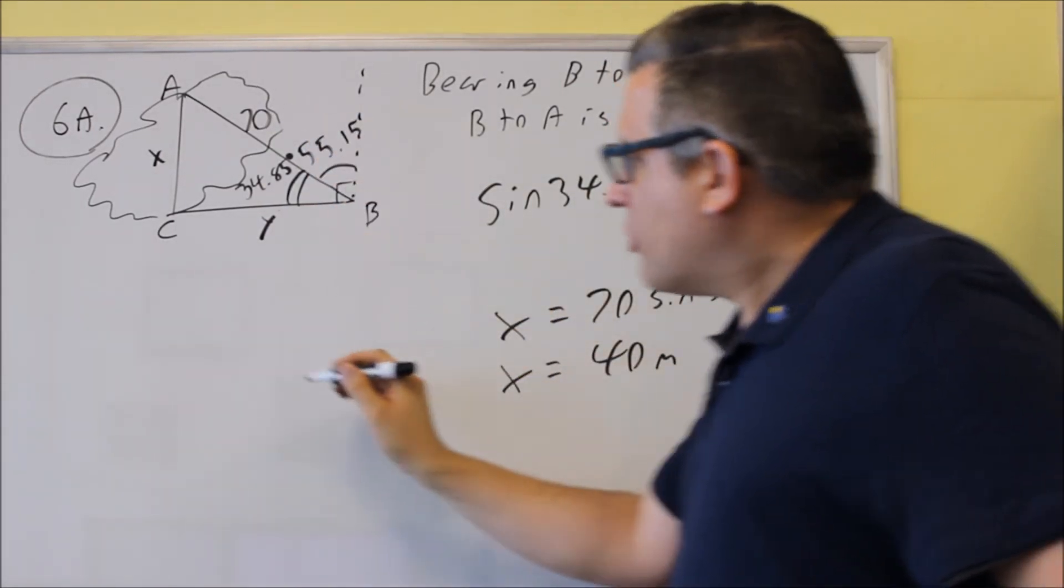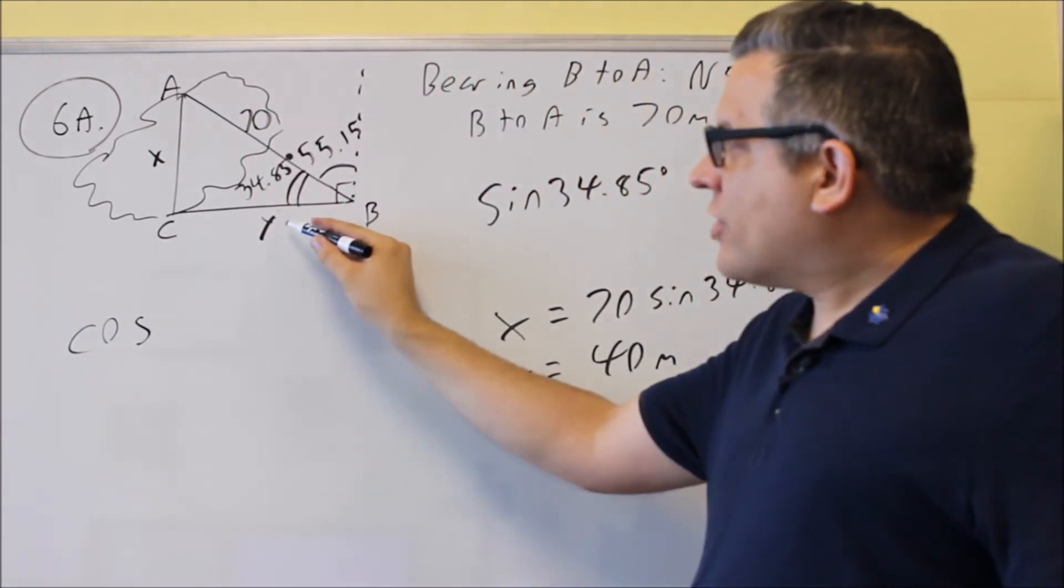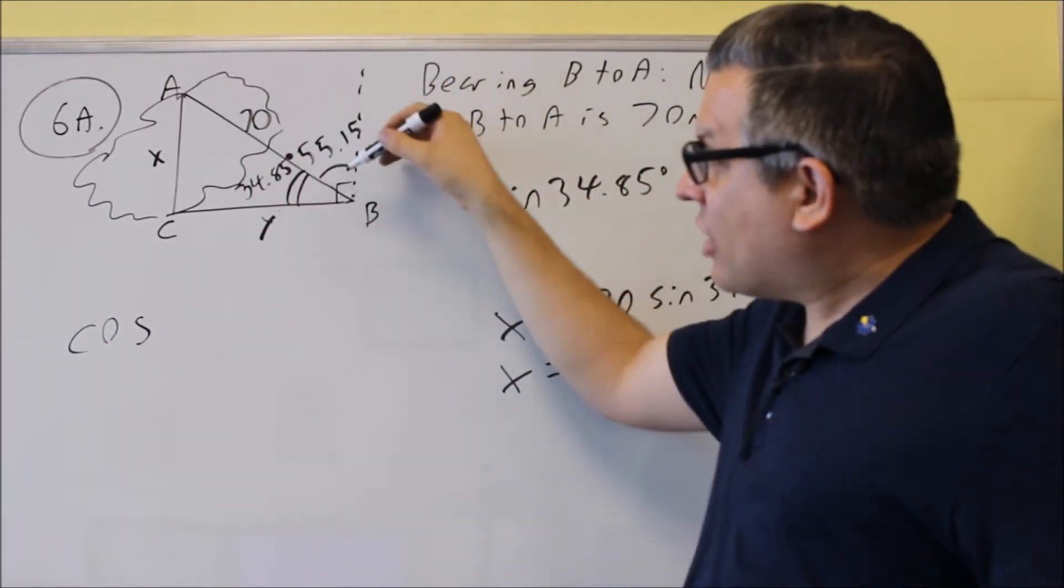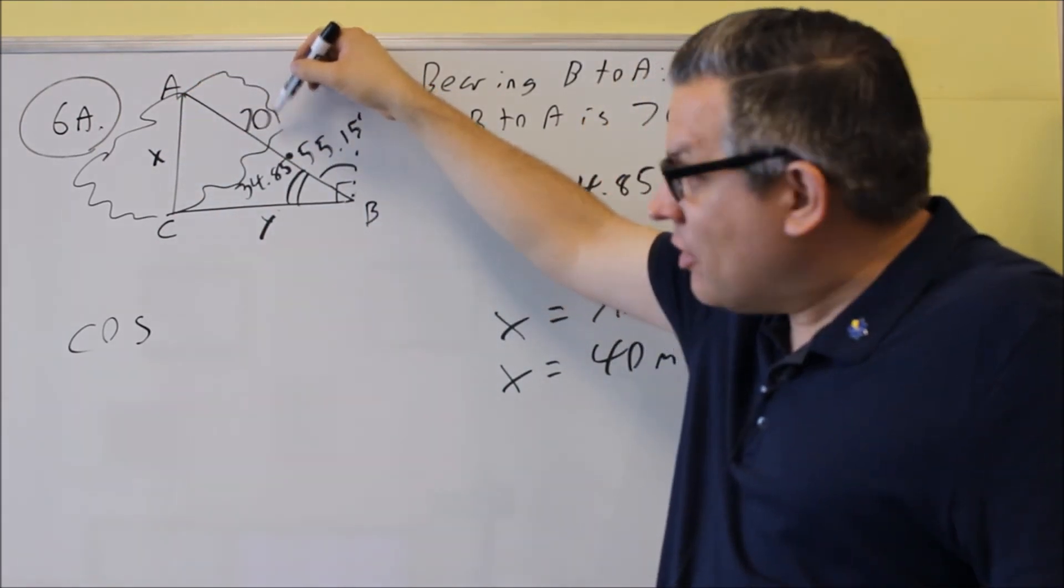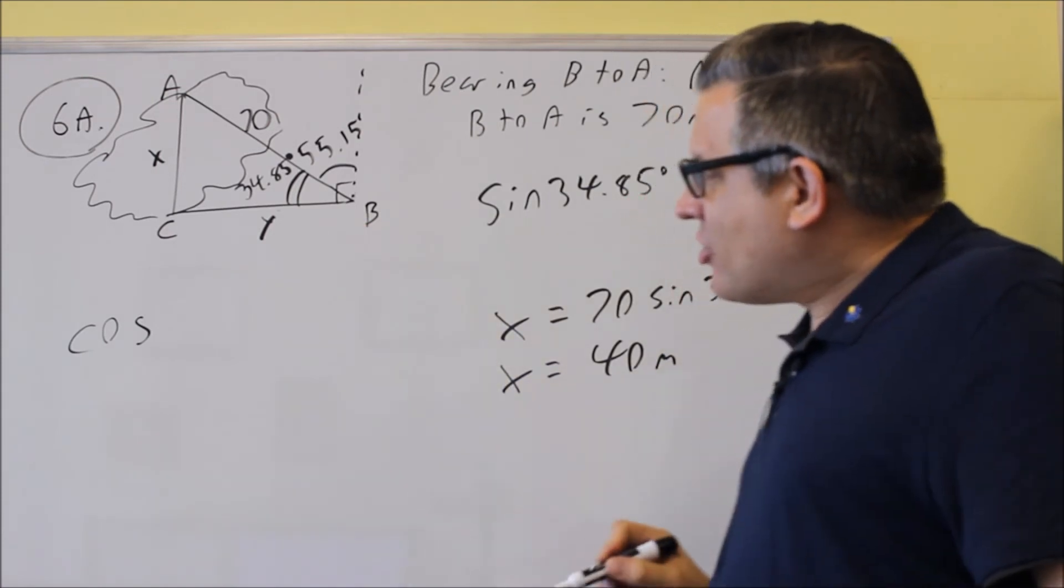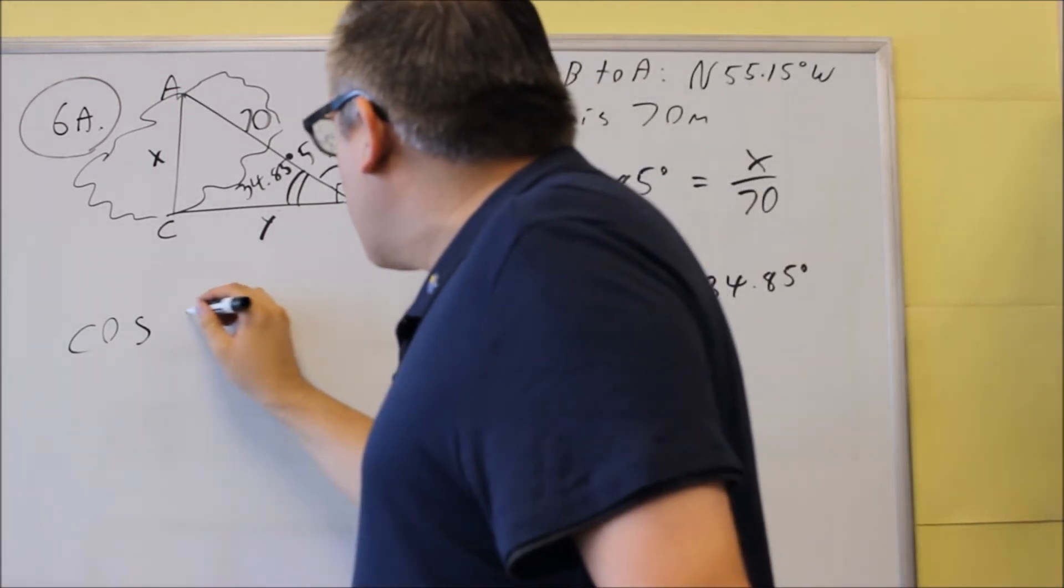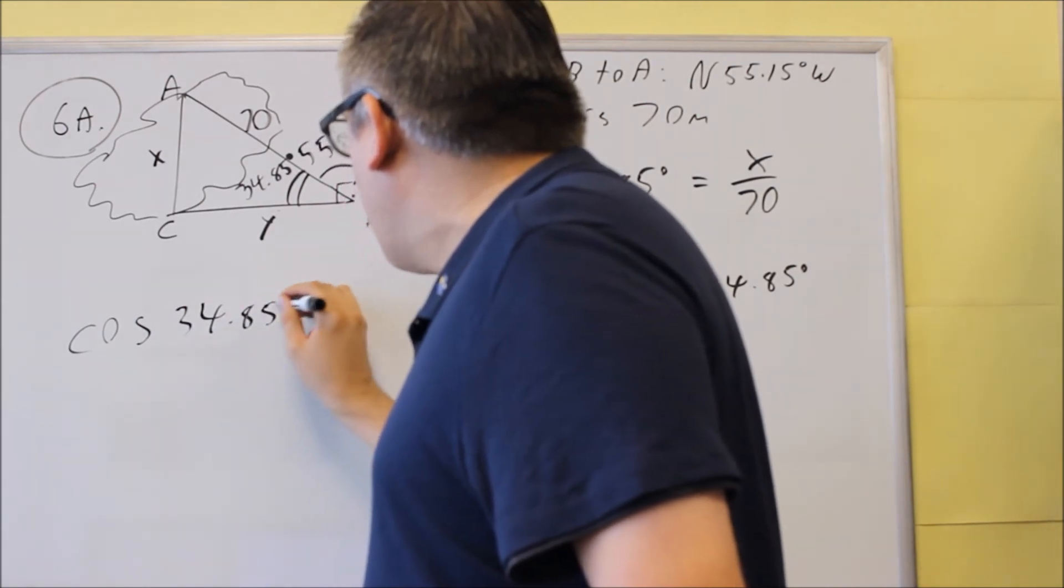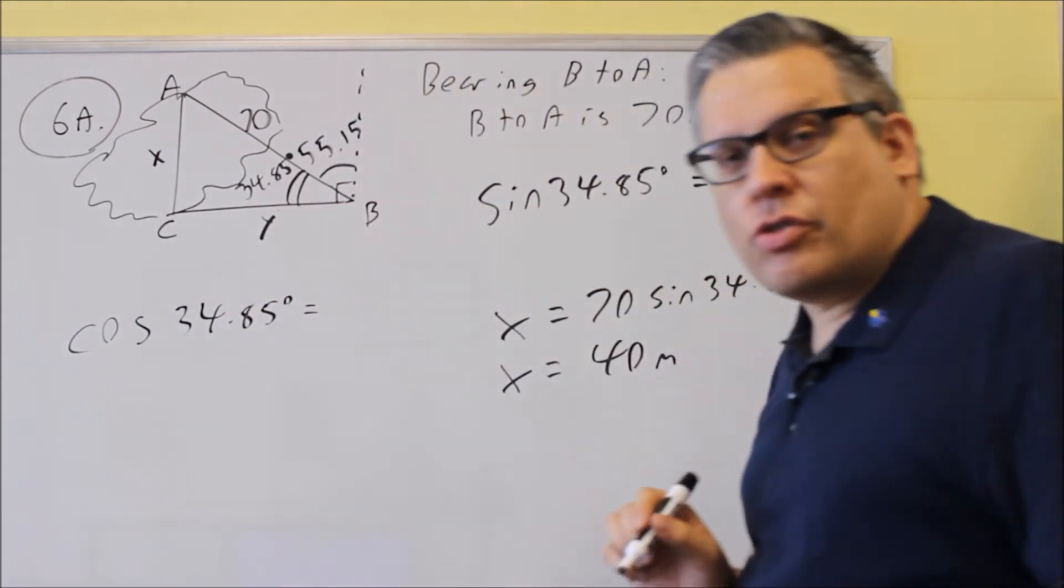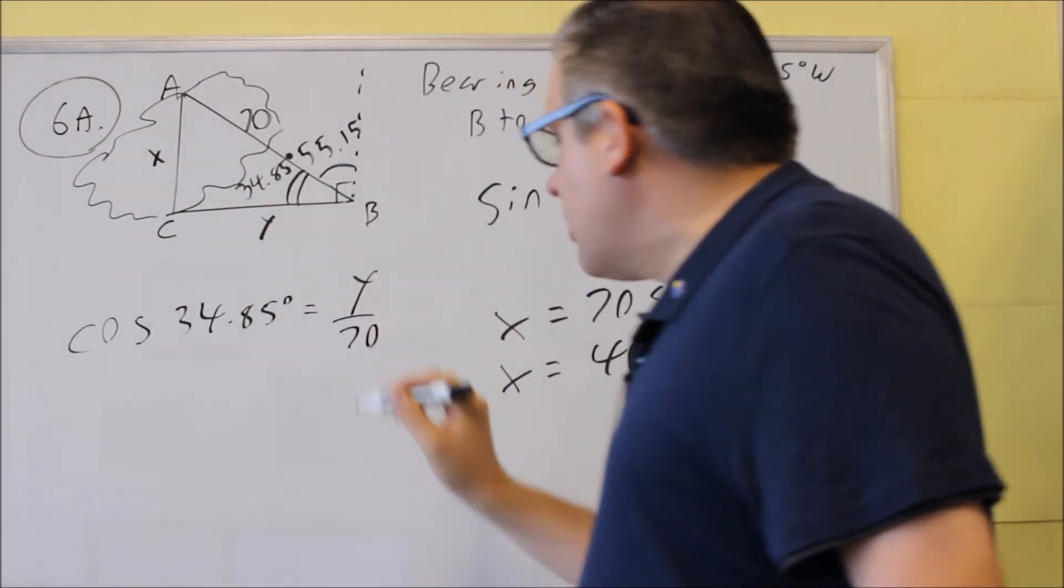So we want to use cosine because we have an adjacent here over hypotenuse. So last time we had opposite over that one. That was sine. This time, this side, CB, that's the adjacent side. And so we're going to use a cosine in this one. We're still going to use 34.85. We're going to have it equal to adjacent over hypotenuse. That's Y over 70.